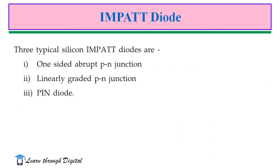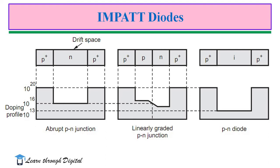There are three typical silicon IMPATT diodes: one-sided abrupt P-N junction, linearly graded P-N junction, and P-I-N diode. This figure represents various types of IMPATT diodes with their doping profiles.